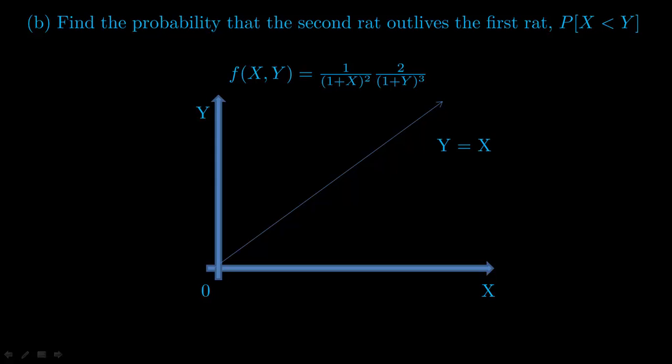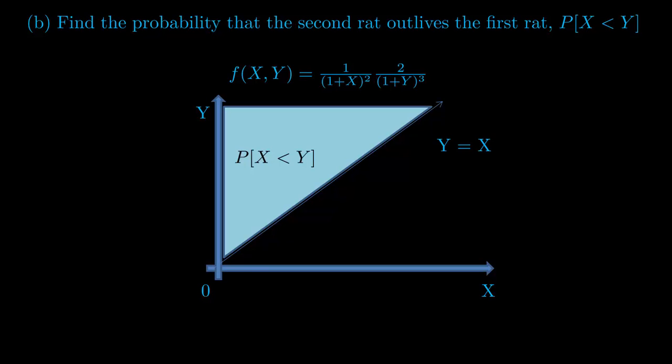One of the easiest ways to look at it is to draw a graph for y equals x. When it says probability that x is less than y, you're taking all the values of x less than y and shading that region. Since this is a joint density function, this is a three-dimensional figure, so you're going to have a double integral because you're finding the volume.